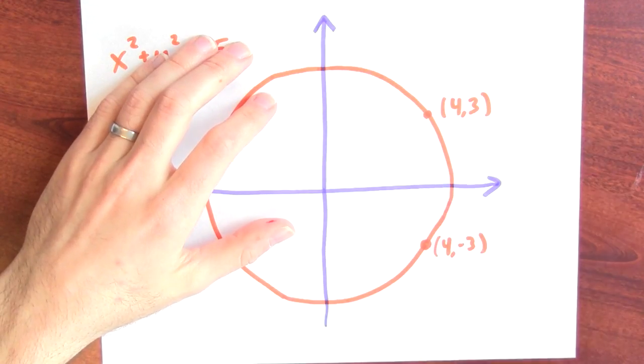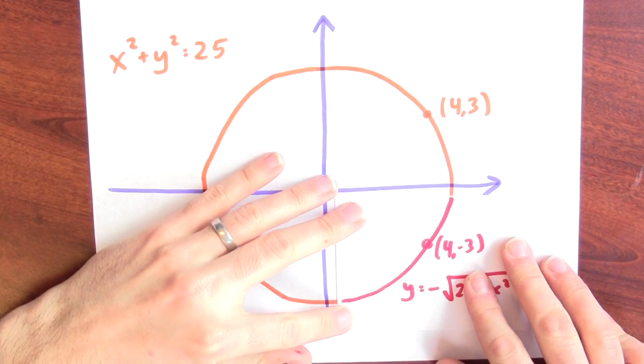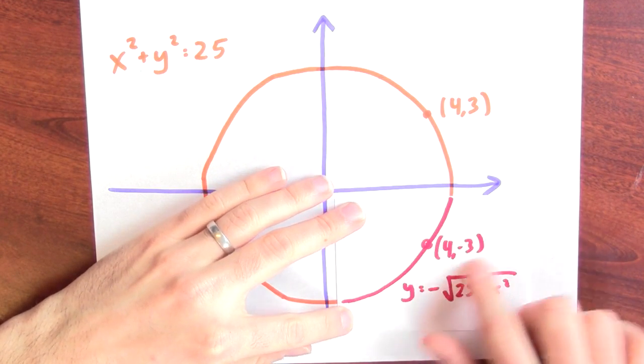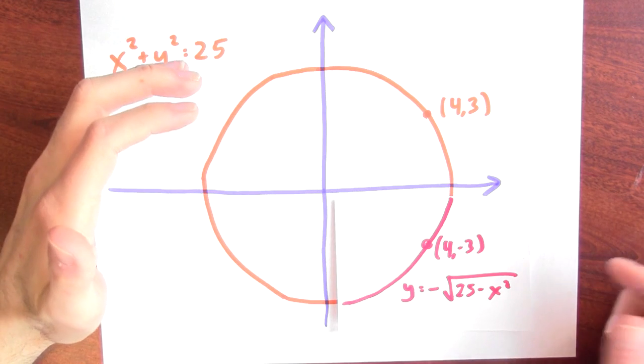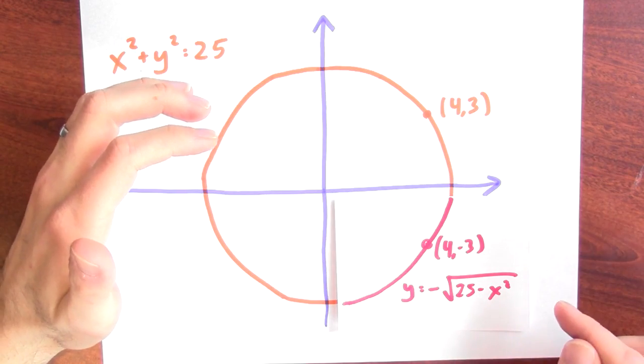If I had picked a different point, then I want to pick a different function. Instead of the square root of 25 minus x squared, if I wanted to stand down here near the point 4 comma minus 3, well then maybe I'd pick the function y equals negative the square root of 25 minus x squared.